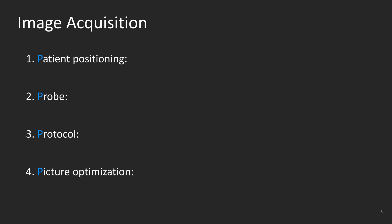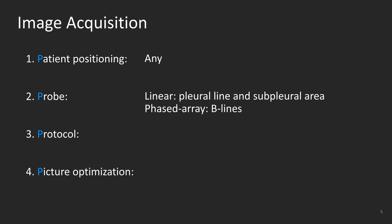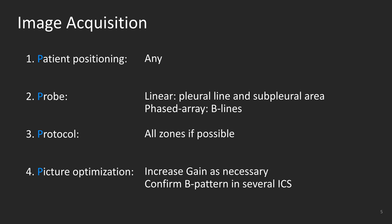What are the tips for optimal image acquisition in alveolar interstitial syndrome? Patient positioning is whatever is most comfortable for the patient, so long as we can do a proper exam. For probe selection, we will use the linear high-frequency probe to evaluate the pleural line and subpleural consolidation, and the phased array low-frequency probe to look for B lines and their distribution. For protocol selection, it is important that you scan over all zones and spatially dependent areas — try to scan the entire back of the patient if possible. For picture optimization, you may need to increase your gain. Confirm B pattern in several intercostal spaces in both lungs and their distribution, whether homogeneous or heterogeneous.